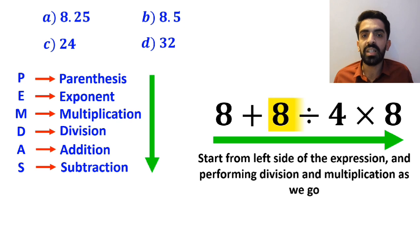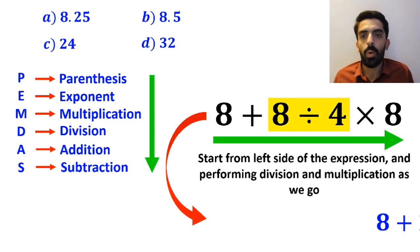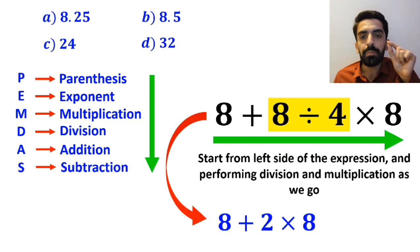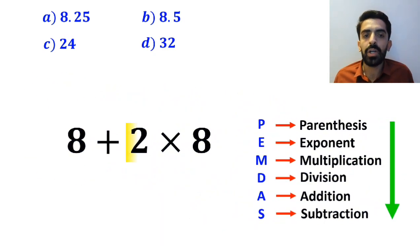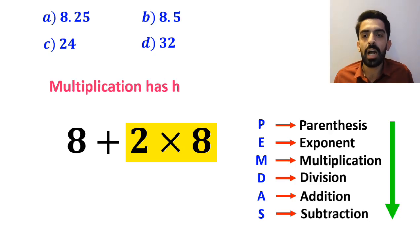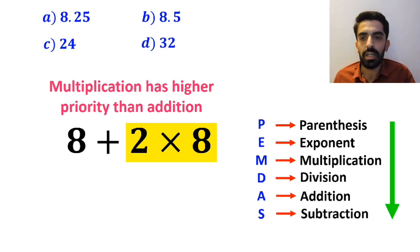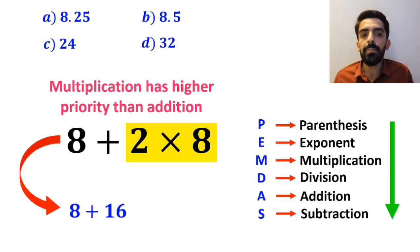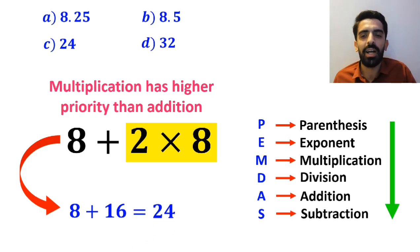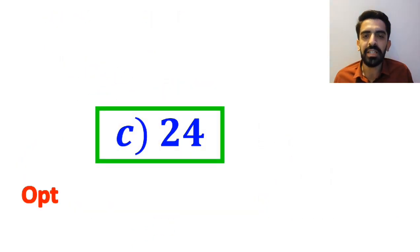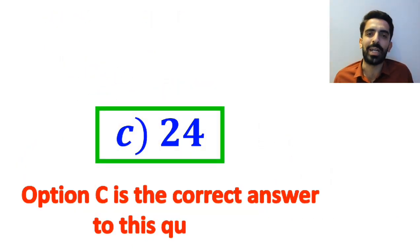So, we start with the division between 8 and 4, and write 8 plus 2 multiplied by 8. In the next step, we go to the multiplication between 2 and 8, because multiplication has higher priority than addition. This simplifies to 8 plus 16, which ultimately gives us the answer 24. Therefore, option C is the correct answer to this question.